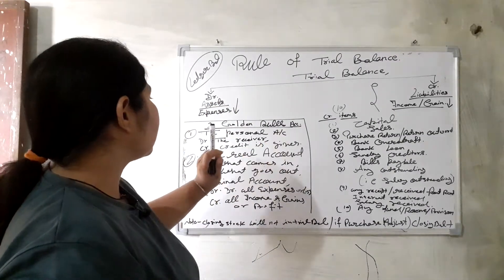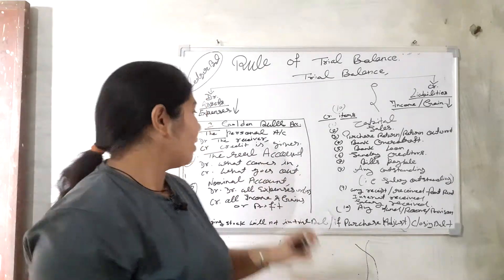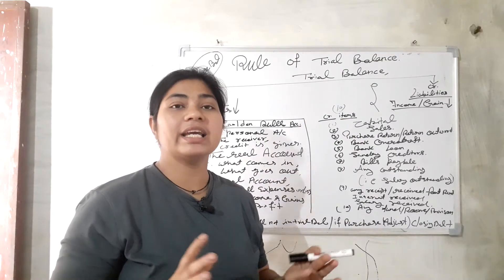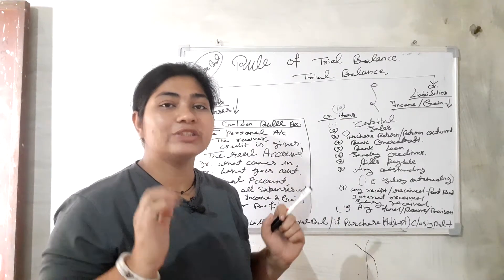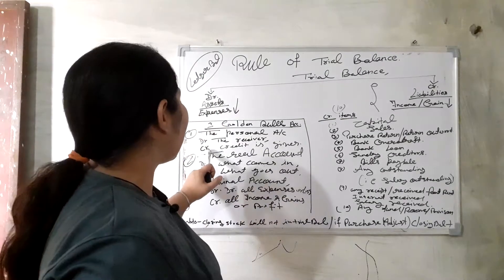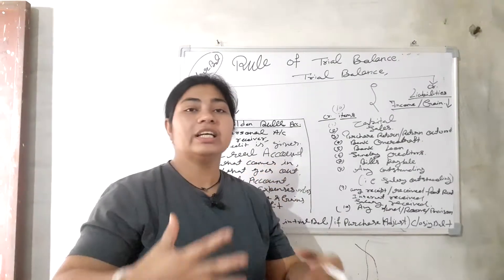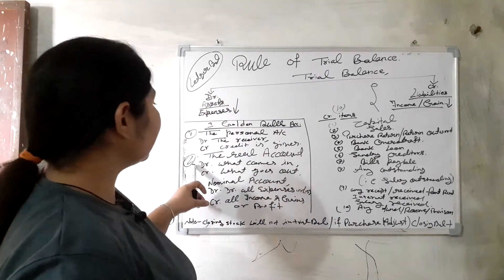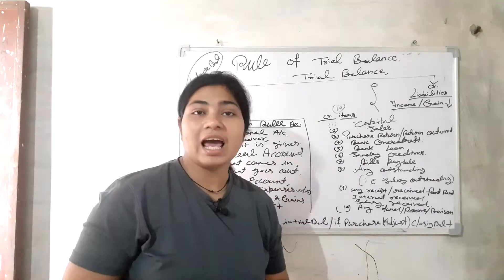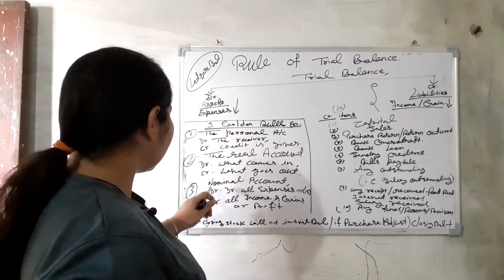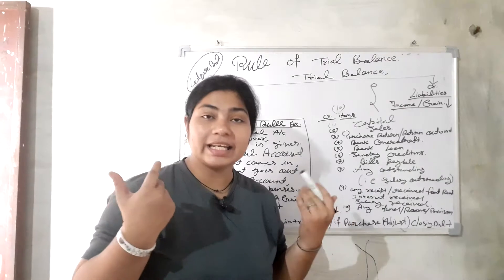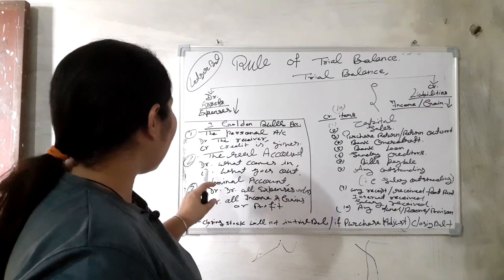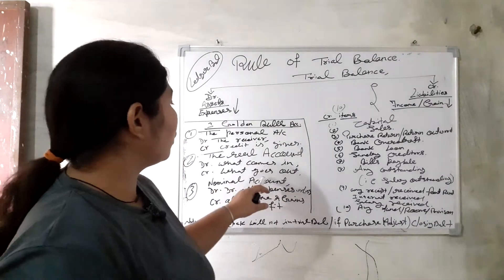The first golden rule is the Personal Account: in debit comes the receiver (prapt karta — the one who receives), and in credit comes the giver (jo deta hai). The second is the Real Account (vastavik account): in debit comes what comes in, and in credit comes what goes out.